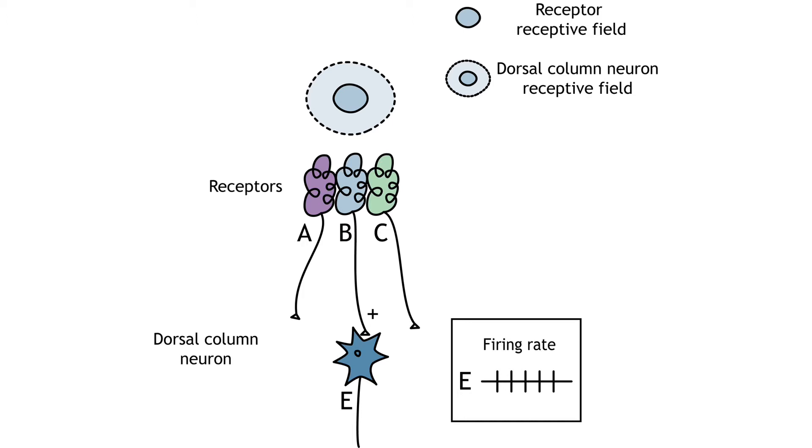The mechanoreceptors synapse on neurons in the dorsal column, and those neurons have more complex receptive fields. The dorsal column nuclei have receptive fields that are divided into center and surround regions. The center of the receptive field is a result of direct innervation from the mechanoreceptors.